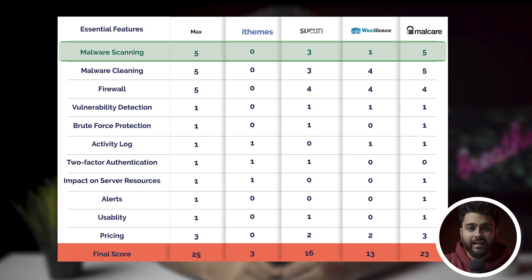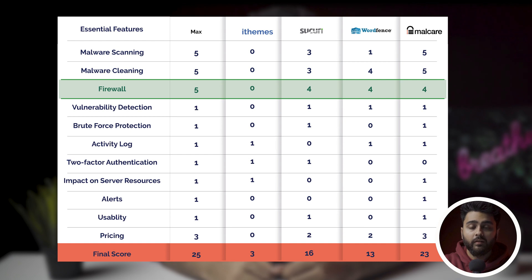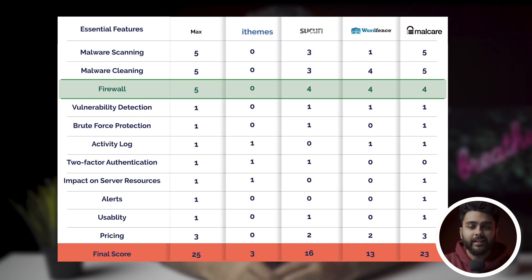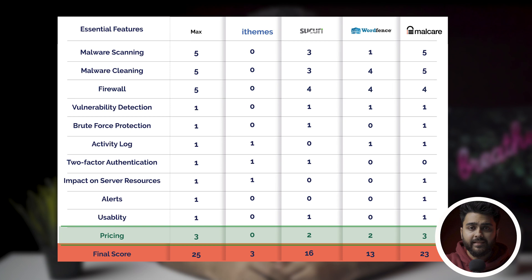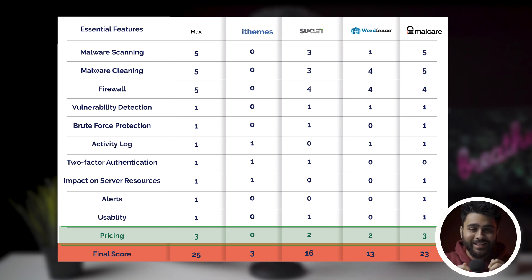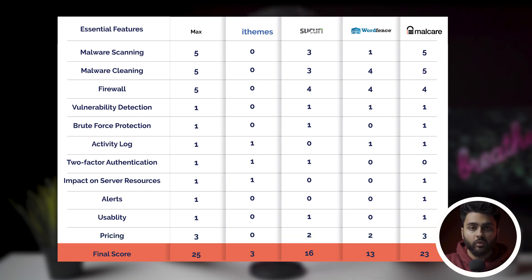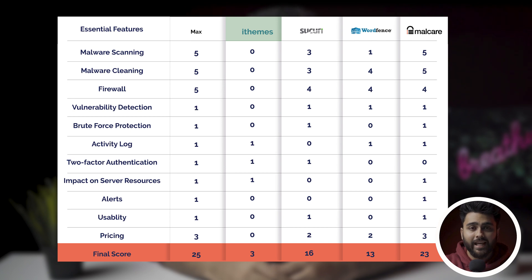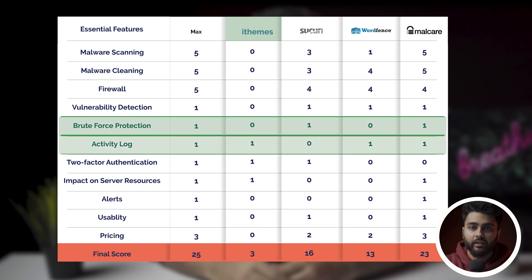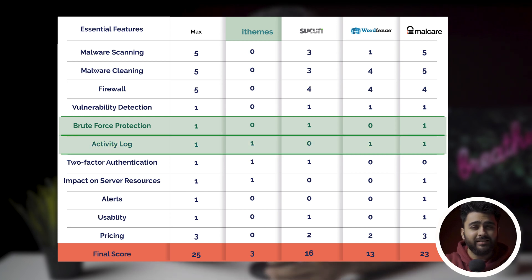In our experience, malware scanning, malware cleaning, and a firewall are the most important features for WordPress security — scored out of 5. Pricing will be scored out of 3, with 3 being the most bang for your buck and 0 being a bad deal. Other parameters will be scored 0 or 1. iThemes scores low because it is missing a scanner, cleaner, and firewall, and it doesn't have functional brute force protection, an activity log, and only occasionally detected a vulnerability.